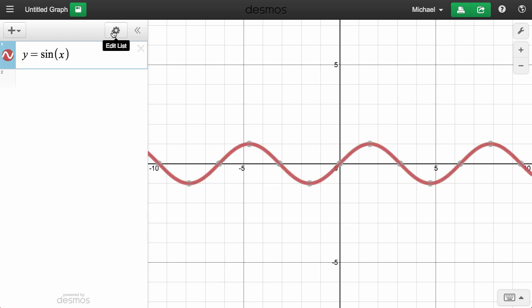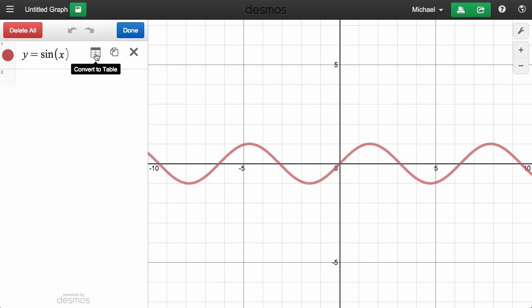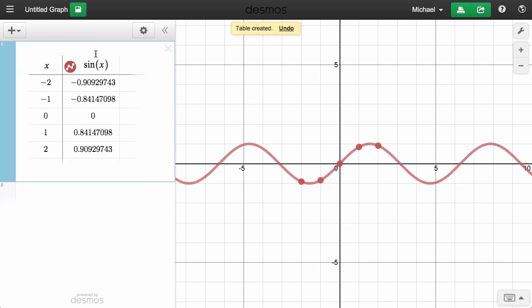Next, click Edit List and select Convert to Table. Desmos automatically creates a table of values with our function at the top of the dependent column.